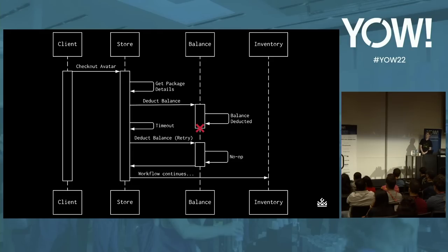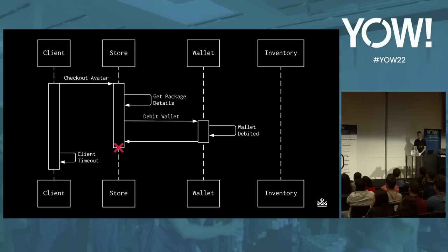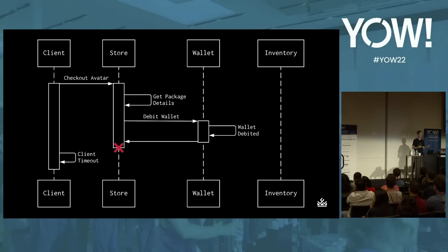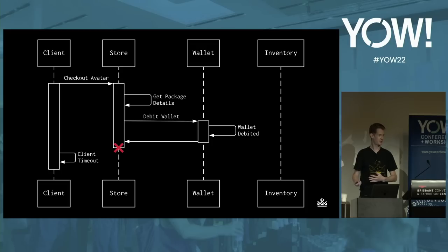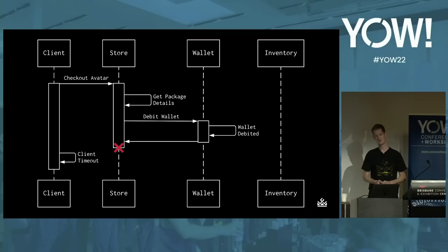On top of that, what if our store crashed halfway through a workflow? Again, the balance might be deducted and an avatar not assigned to the customer, although it's difficult to know for sure. This type of workflow is generally unreliable. There are many examples where the failure of one service in this workflow leads to the failure of the entire workflow.